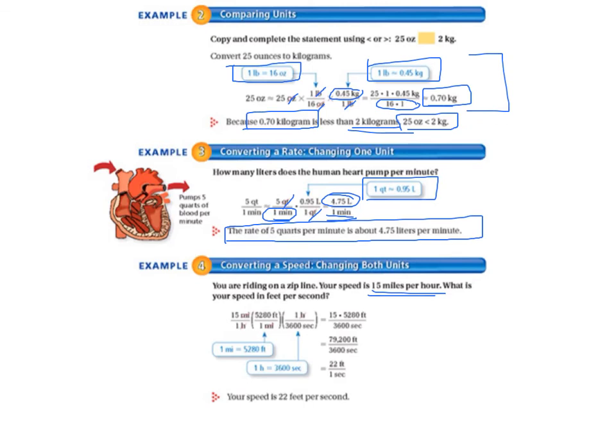So we are going to change the miles at the top. It says 1 mile is 5,280 feet, and so we've got that conversion factor in here, and then we've got 1 hour is 3,600 seconds. So we've got that one in there too. We've got a lot of multiplying to do. So we've got 15 times 5,280. And then when we multiply the bottom, that's 3,600 seconds. So when we multiply all of that, it comes out to 79,200 feet per 3,600 seconds.